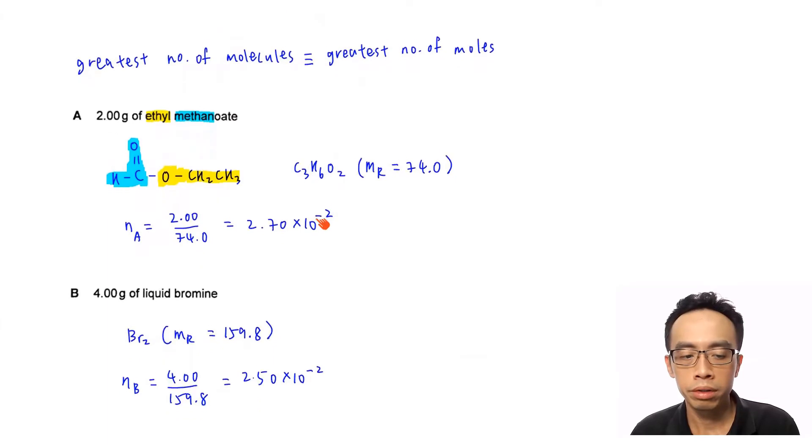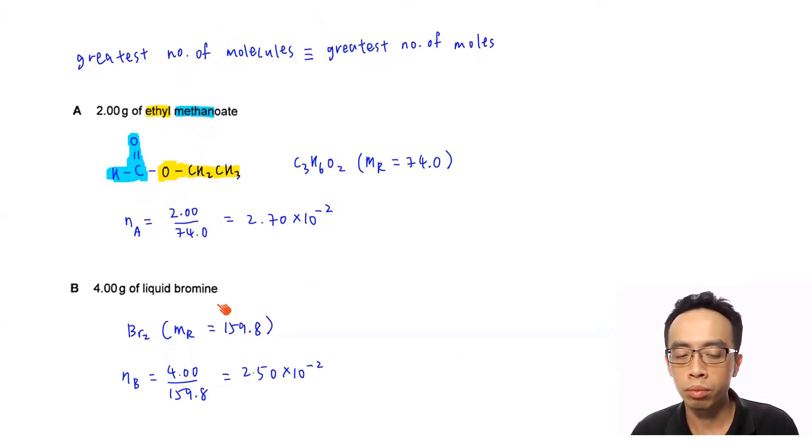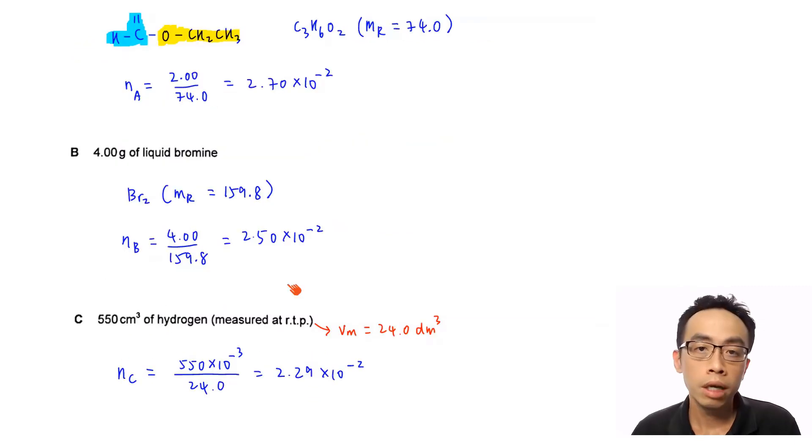Now, option B, 4.00g of liquid bromine. Liquid bromine is a Br₂ molecule. Molar mass, we can work this out, 159.8. So the number of moles for option B will be mass in gram over molar mass, 4.00 divided by 159.8. I'll get 2.50 × 10⁻². So this is the number of moles for option B.